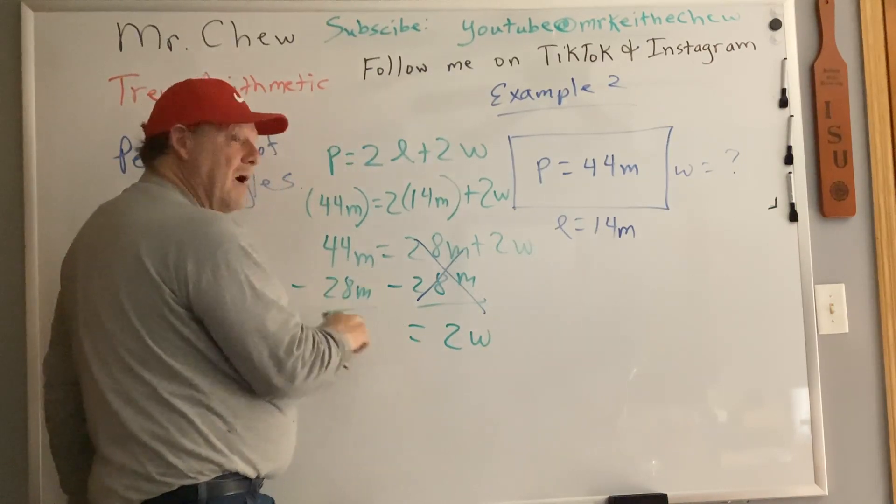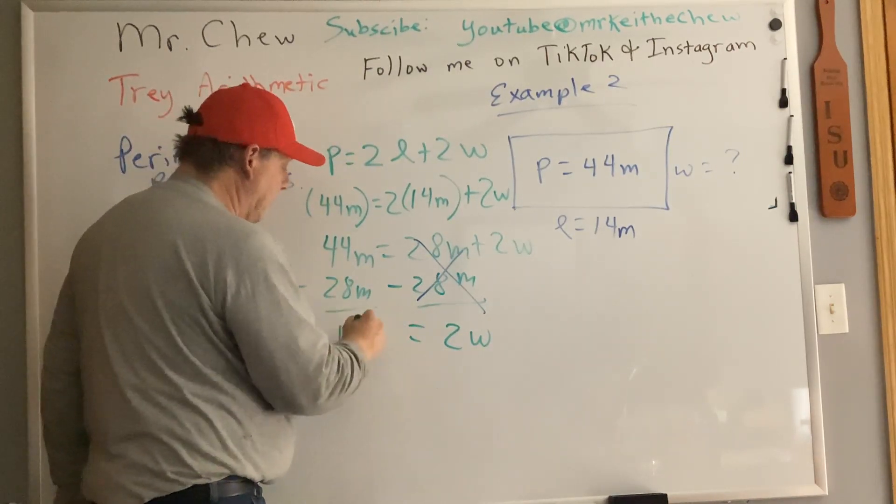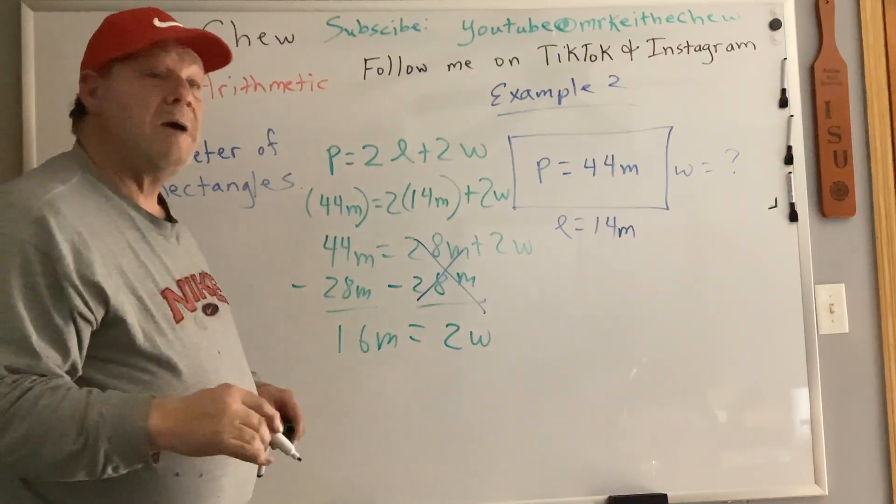When I'm teaching this to my pre-algebra students, I always used to tell them you're crossing this out. It's gone. It's a zero and zero plus 2W is 2W. And 44 meters minus 28 meters is 16 meters. It's a two-step equation. There's my first step.